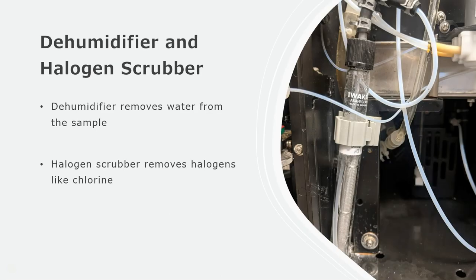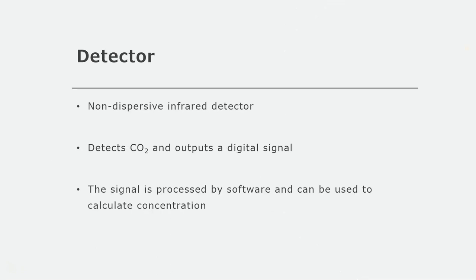After combustion, the sample has water removed from it by a dehumidifier, and then it gets scrubbed in the halogen scrubber to remove things that could damage the detector, like chlorine. The final step in the TOC is the detector, which is a non-dispersive infrared detector. This detects carbon dioxide and outputs a digital signal. This signal gets processed by software which is then plotted to make peaks, and the area under these peaks is proportional to concentration based on your calibration curve.